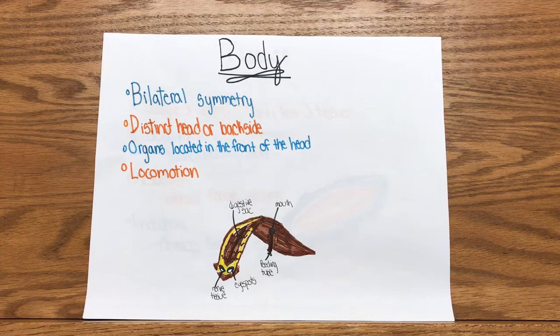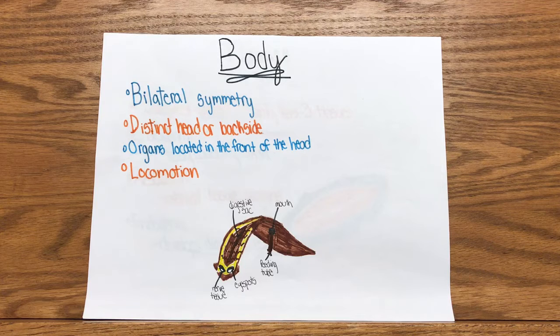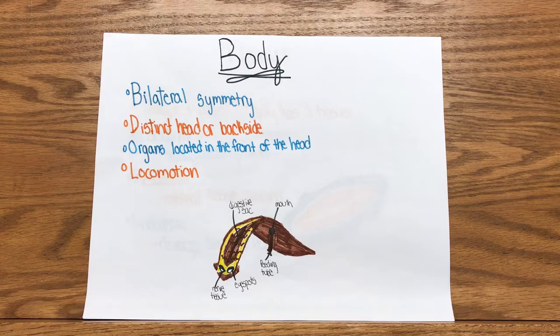Flatworms have a bilateral symmetry and mirror image. They also have a distinct head or backside. Their organs are located in the front of the head, and they have muscles that allow them to twist and turn.